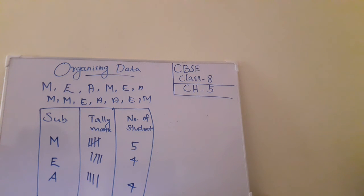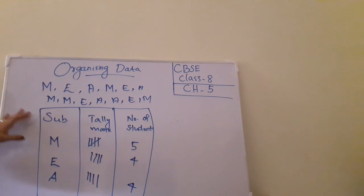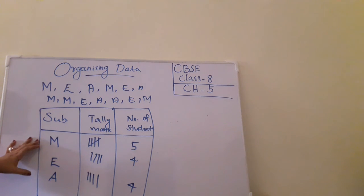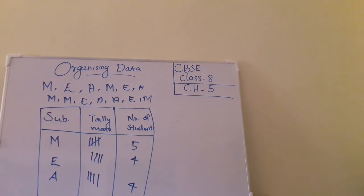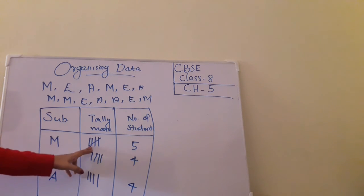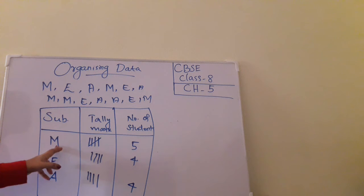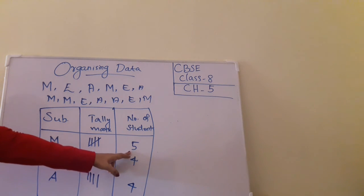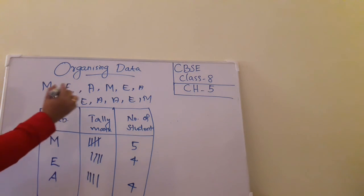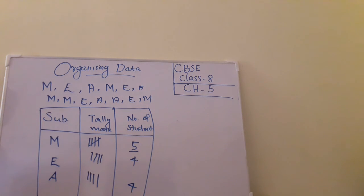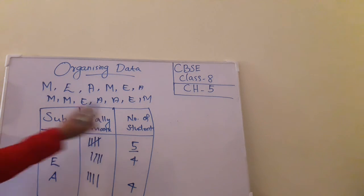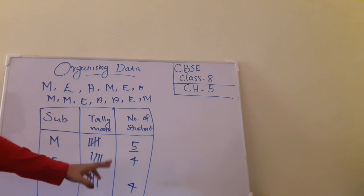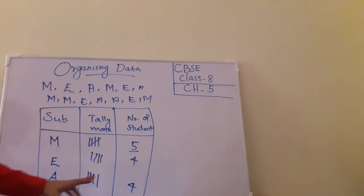This table is called the frequency distribution table. From the raw data, we can make this table by arranging the data. In this table, the number of tally marks — that is, the number of students who like the subject — is called the frequency of that subject.